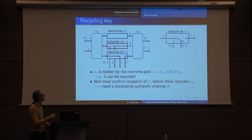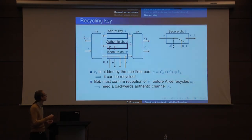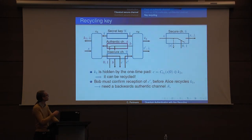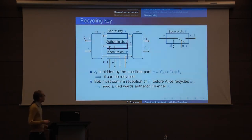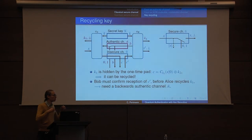What we're going to need is a backward channel so Bob confirms to Alice that he has received the message — this is very similar to what Serge did in his previous protocol. We only have to modify the protocol simply: when Bob gets C′, he sends a backward confirmation bit to Alice, and upon receiving this bit, Alice can recycle K1. Of course, Eve could interrupt the authentic channel, which means Alice might not get K1 — she might just abort. There's nothing we can do about that; this is a generic problem with any key distribution scheme.